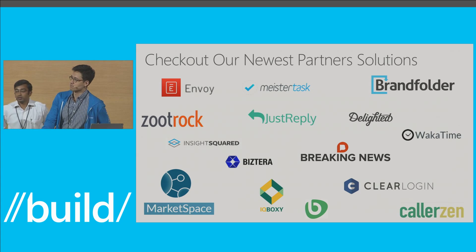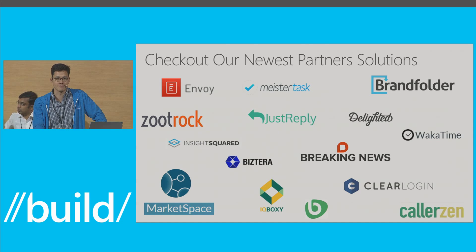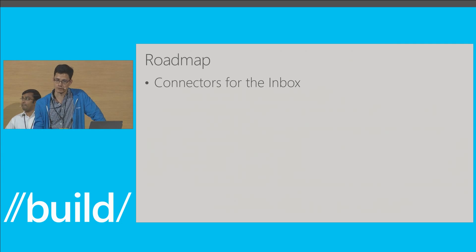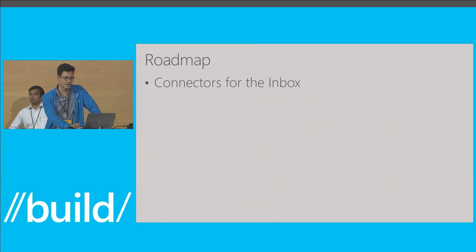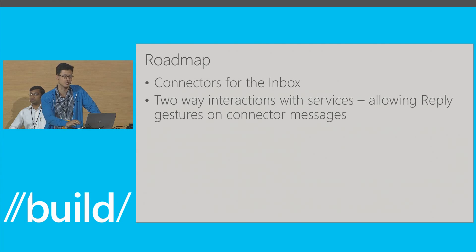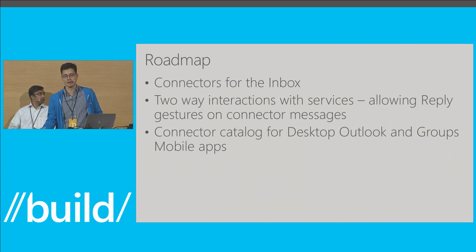These are our newest partners — we've actually launched all 15 of these in the last three weeks, and all of them were able to create, configure, and publish a connector with less than two weeks of dev time. It's really the fastest, easiest way to connect your service to the 60 million Office 365 users. On our roadmap, we're looking at getting connectors in the inbox — today they're a groups feature, but we're seeing that many connectors make sense for personal inboxes too, coming in the next few months. We're also expanding on actions on messages, looking at richer actions beyond the reply gesture. The connector catalog for desktop Outlook and groups mobile apps is coming soon — right now it's in the groups experience, and you'll see it in desktop Outlook and groups mobile apps in coming months.